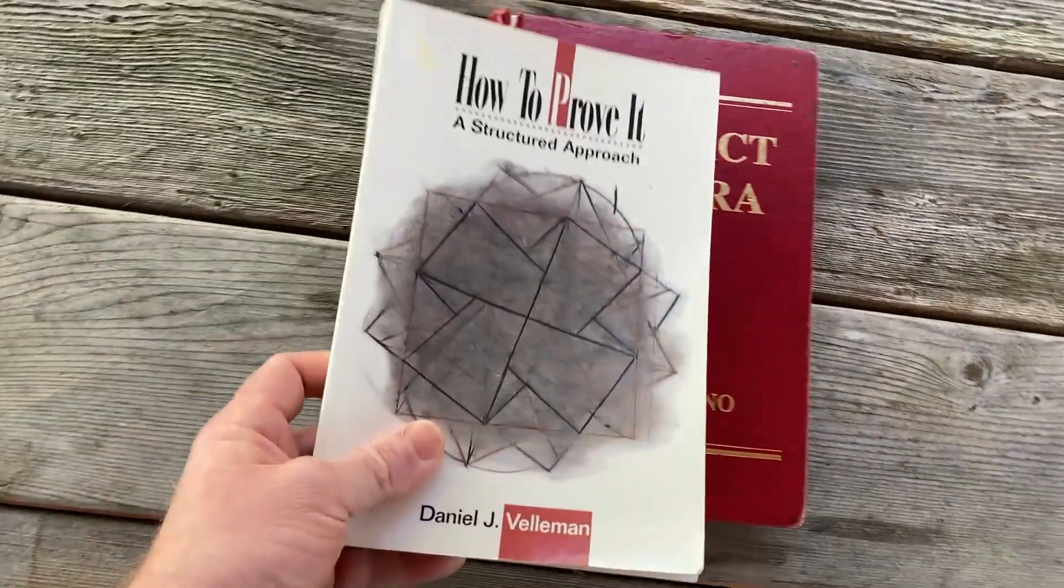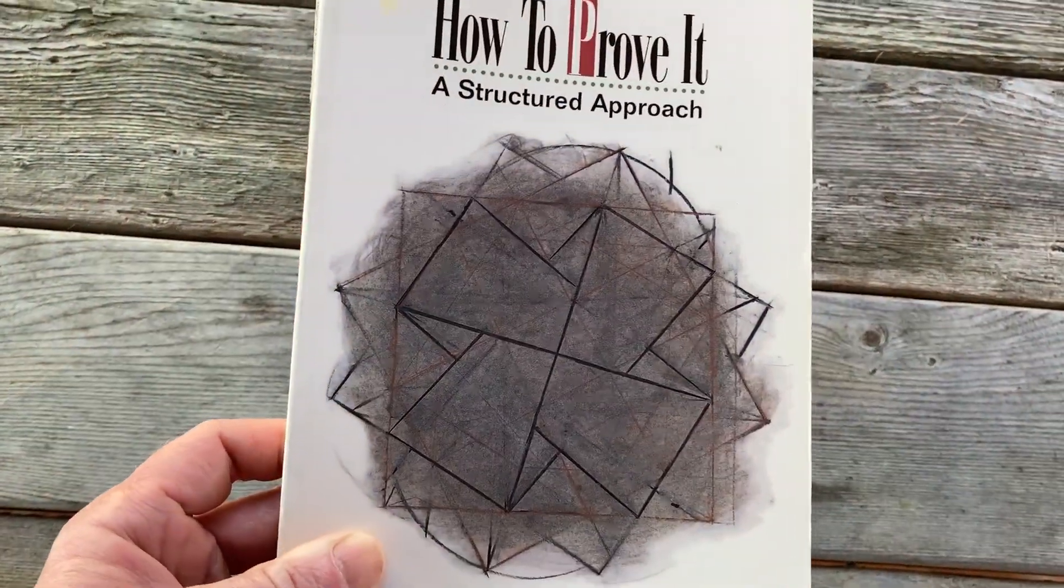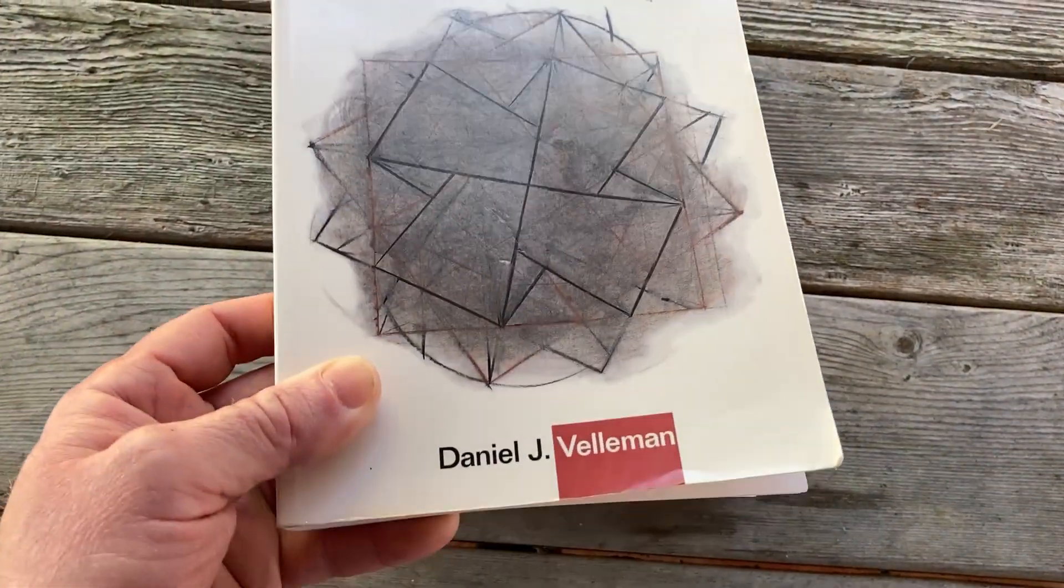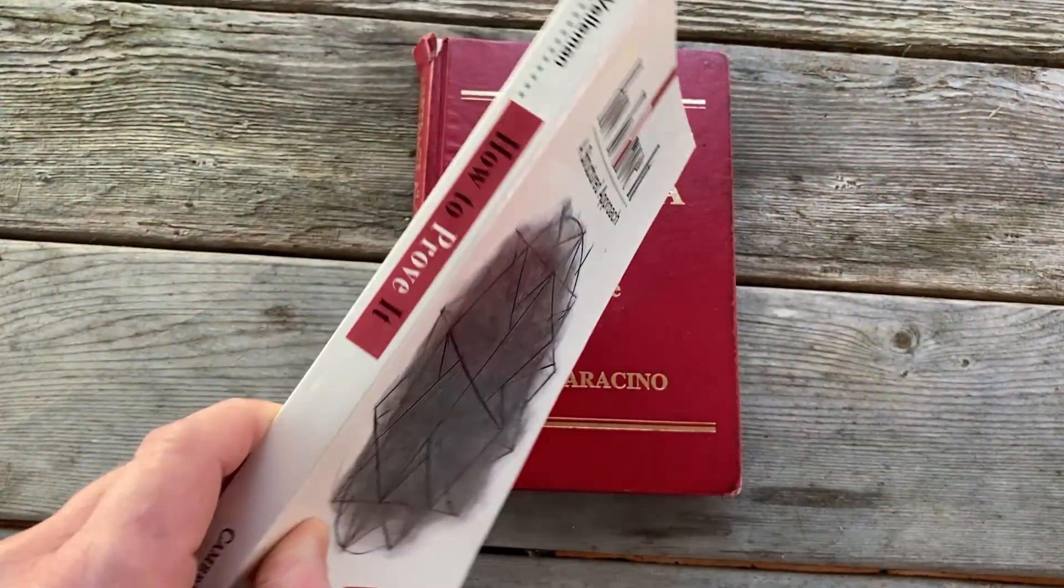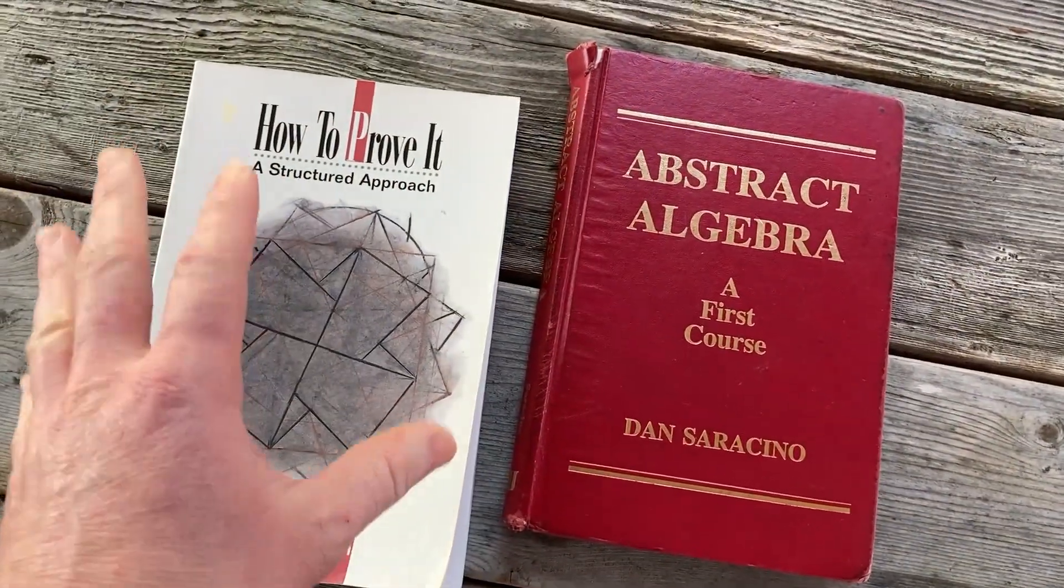I have another book here which is very praised, very popular, and very good. It's called How to Prove It, A Structured Approach by Daniel Velleman. So in order to learn abstract algebra, you have to know how to write proofs.